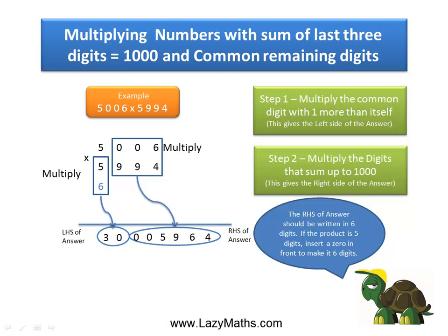Just remember here that because you are multiplying three digit numbers with each other, the answer needs to be in six digits. So even if your answer happens to be in less than six digits, all you need to do is to insert zeros in front of the answer.